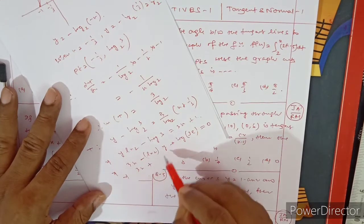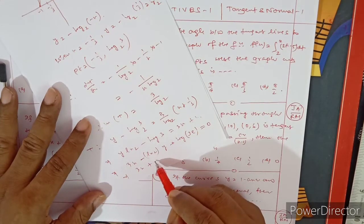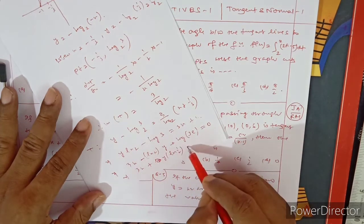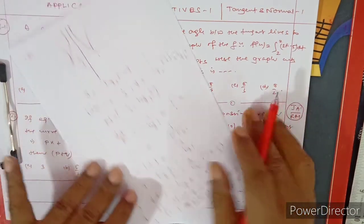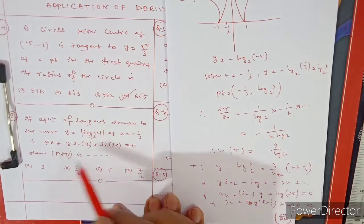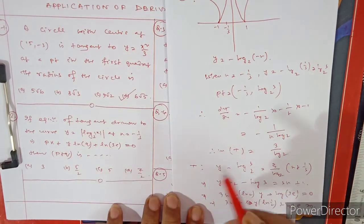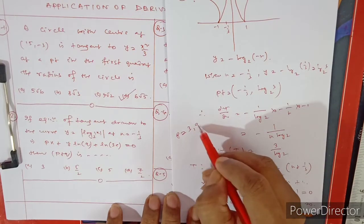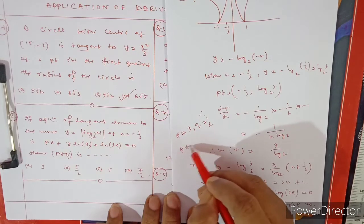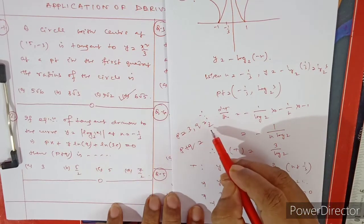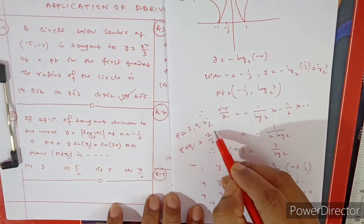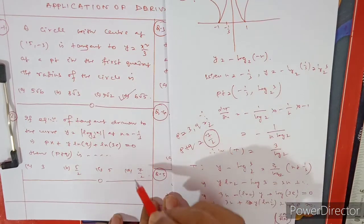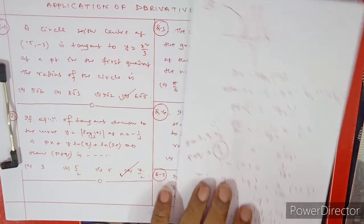Comparing with px + (ln q)y + ln(3e) = 0: p = 3 and ln q = ln(1/2), so q = 1/2. Therefore p + q = 3 + 1/2 = 7/2. This is the correct answer.